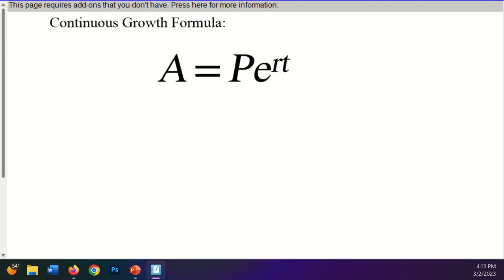The second thing that we're going to talk about is the continuous growth formula. A equals PE to the RT. And if you remember, this is your final amount. This is your initial amount. Now R is the rate as a decimal. And T is the time. And usually that is in years.